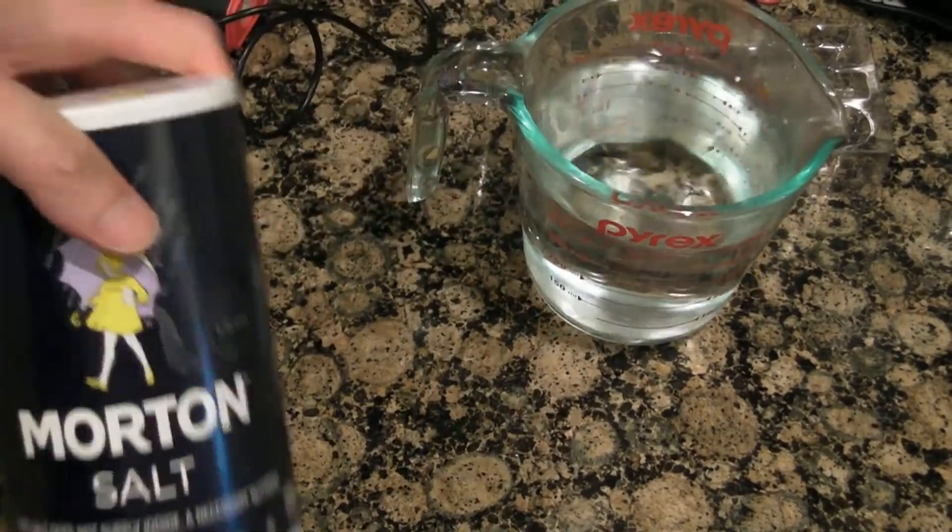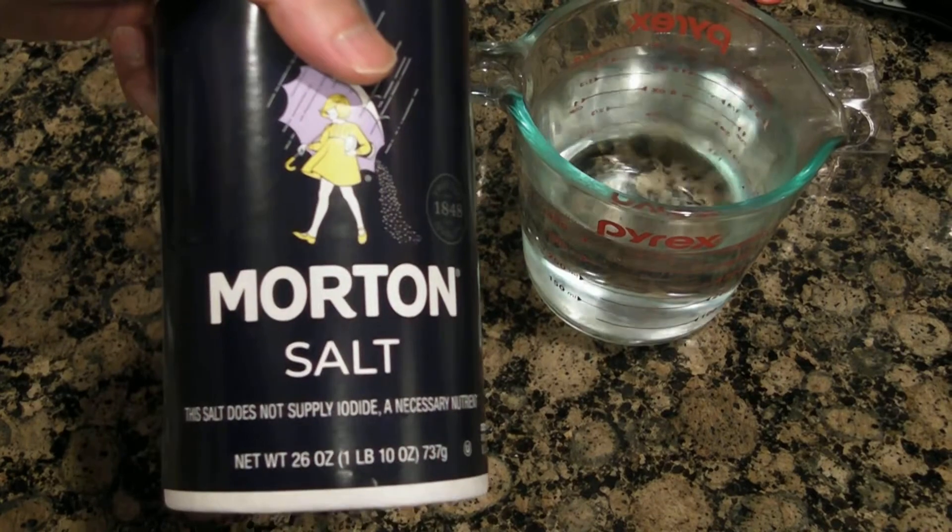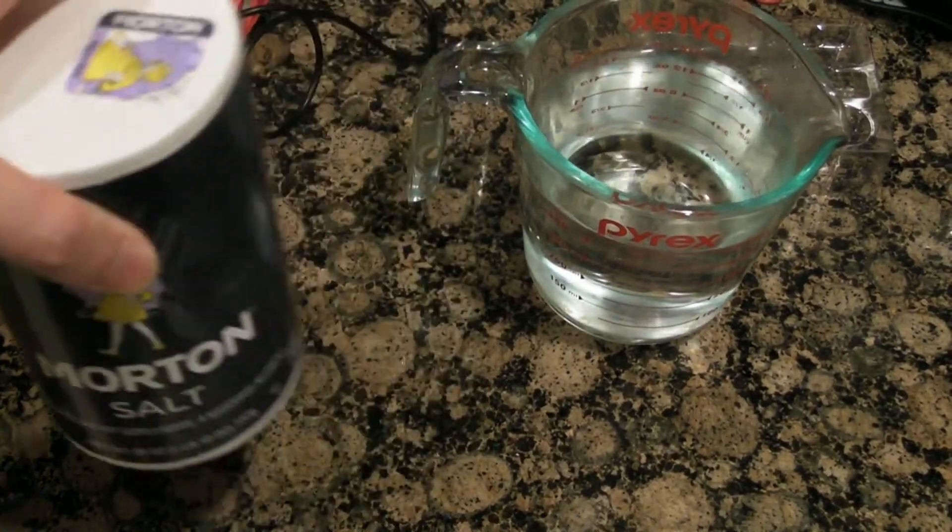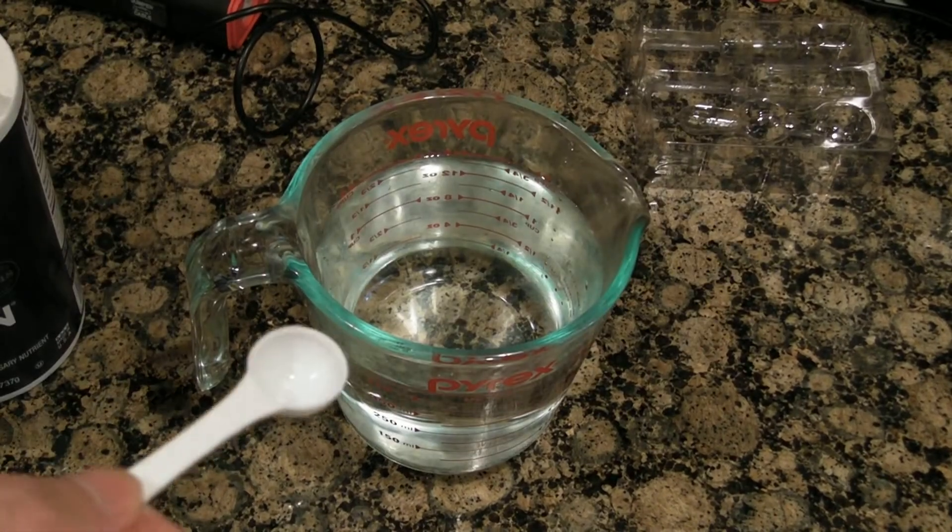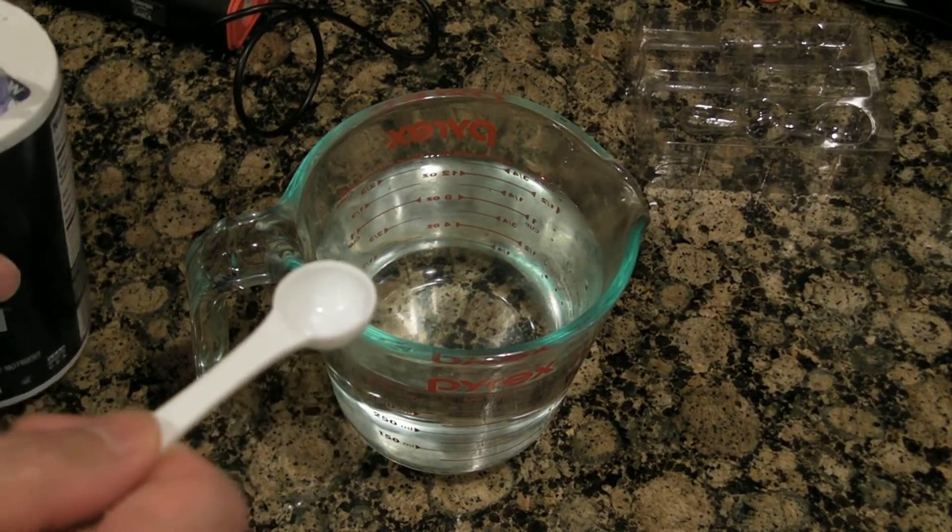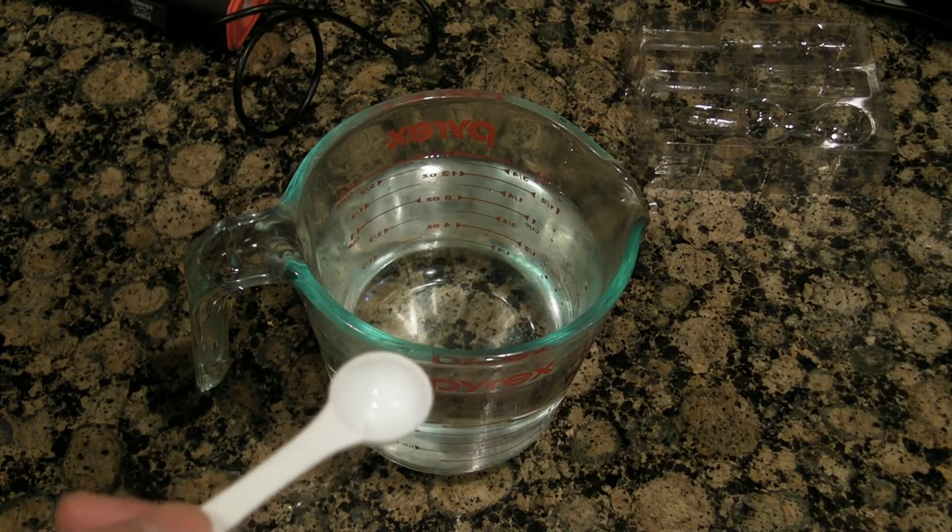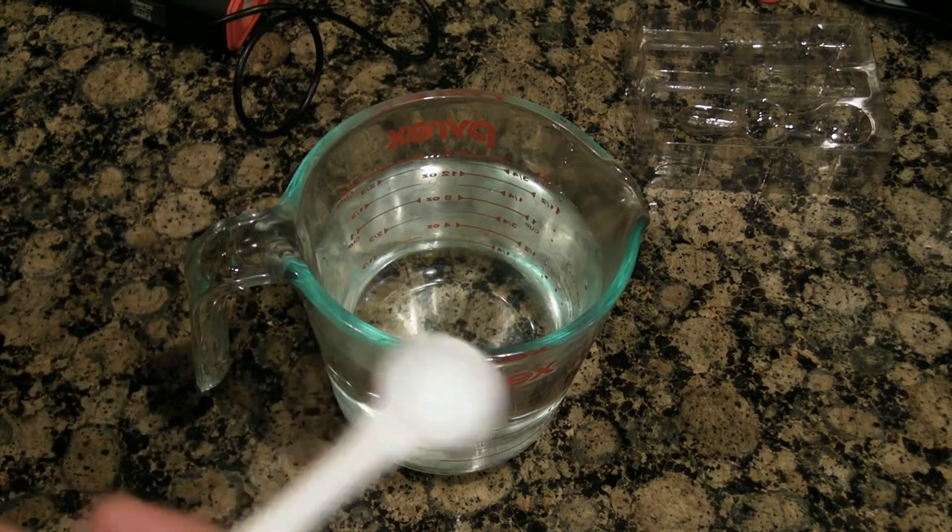And some salt, plain Morton salt, no iodine, just salt. So I'm going to put five little spoons of salt, because it's one spoon per 100 ml, so there's 500 ml, so it's five.